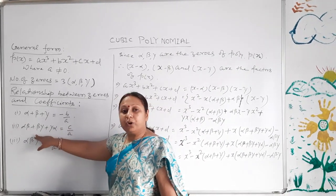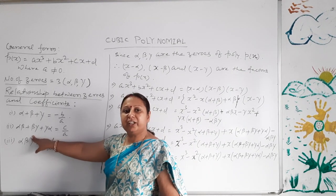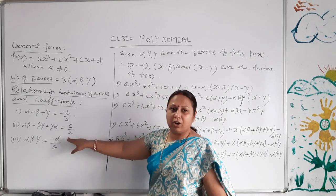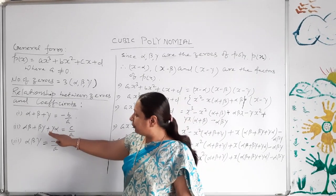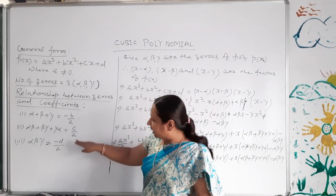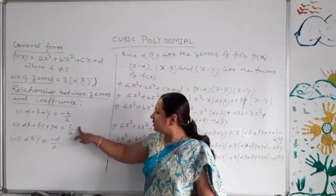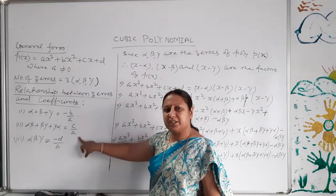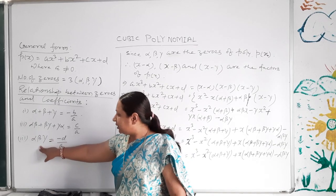The second relationship is the sum of the product of zeros taken two at a time: alpha·beta + beta·gamma + gamma·alpha equals c by a, where c is the coefficient of x and a is the coefficient of x³.